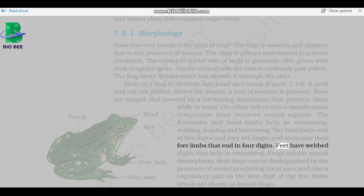Frogs exhibit sexual dimorphism. Male frogs can be distinguished by the presence of sound producing vocal sacs and also a copulatory pad on the first digit of the forelimbs which are absent in female frogs.